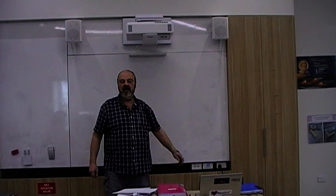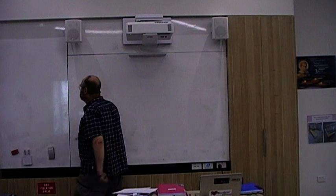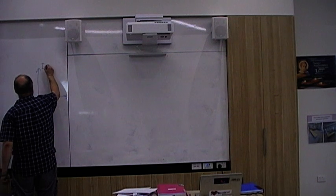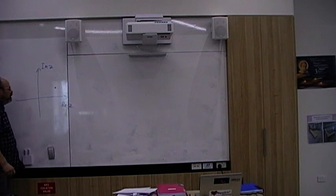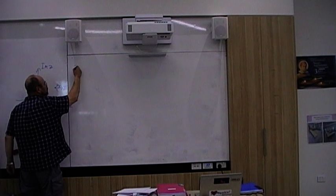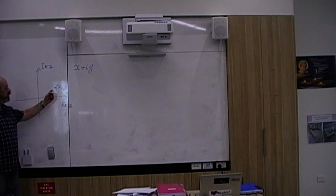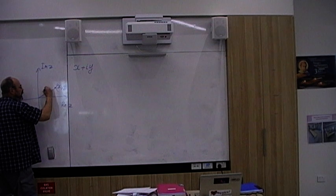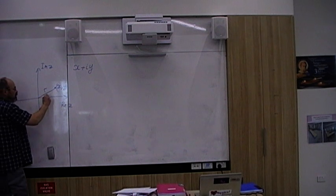So, polar form of the complex number. If we have the imaginary part of z, this is the real part of z, and we have some point with the coordinates x, y, this is a complex number x plus iy. But we can represent it in a different way. If we connect the point with the origin, the distance to the origin is r and the angle is theta.